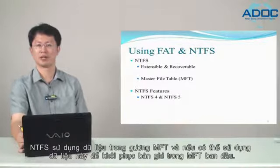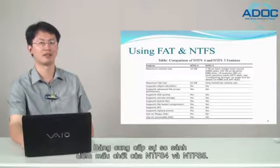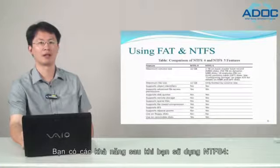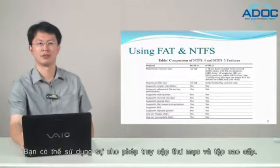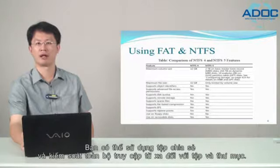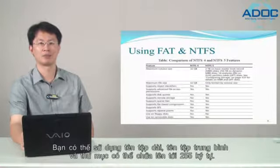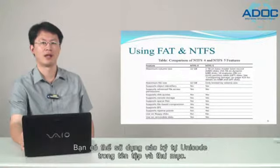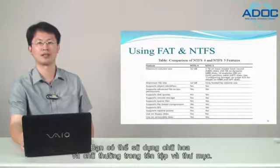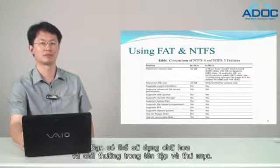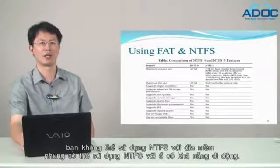A table provides comparisons of key features of NTFS 4 and NTFS 5. With NTFS 4, you can use advanced file and folder access permissions, file sharing with full control of remote access, long file names up to 255 characters, Unicode characters, and upper and lowercase letters in file and folder names. You can use NTFS with fixed disks, but not with removable disks.